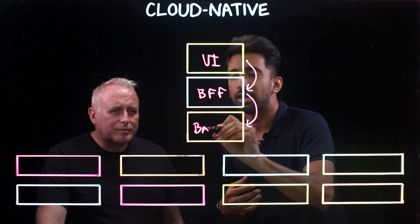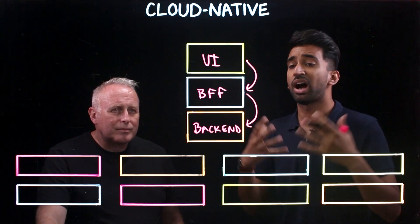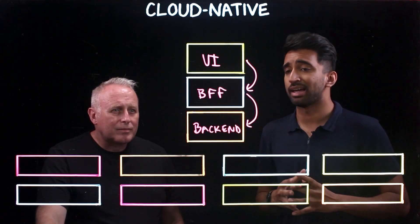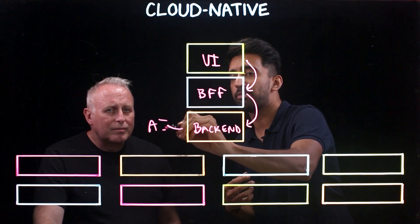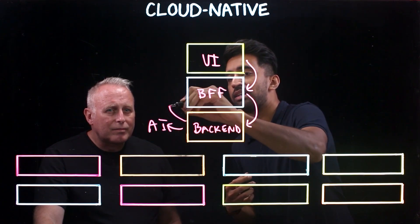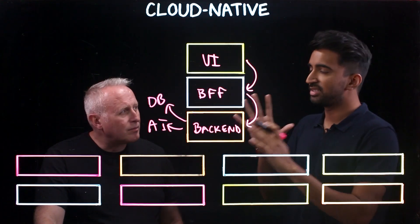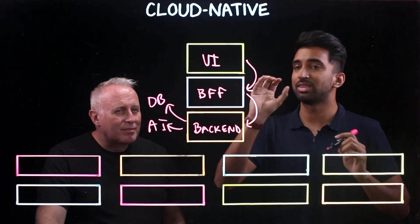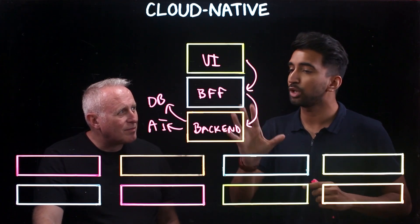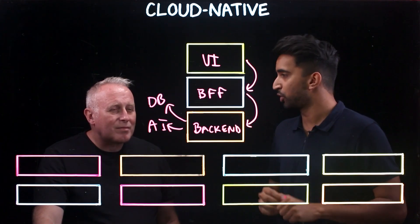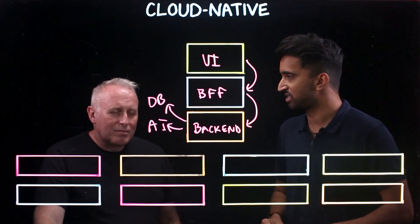In the backend layer, for higher-value services, maybe the backend goes out to something like AI capabilities and in addition a database. As the expert, I'm going to hand this off — this is the application architecture I want. How do I start migrating this over to a cloud-native approach and what are the DevOps considerations?